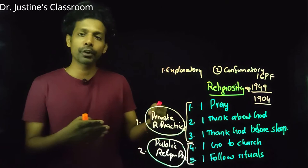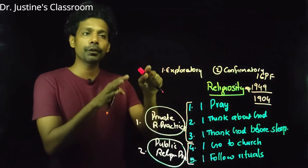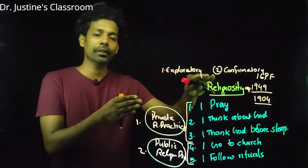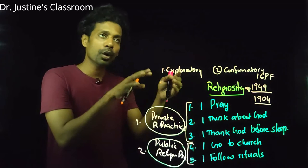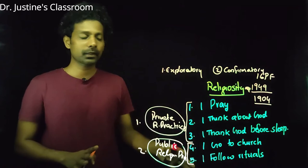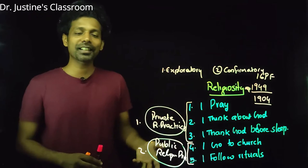In confirmatory factor analysis, I already know the factors — for example, that these three statements represent private and these two represent public religious practices — and I try to confirm whether this structure fits properly using a modeling approach. Generally, during scale construction you first do exploratory factor analysis, and then use those findings in a new population to confirm the same factors using CFA.